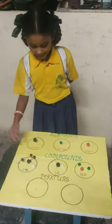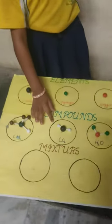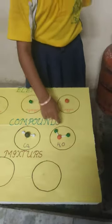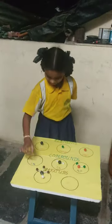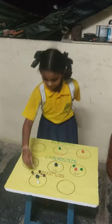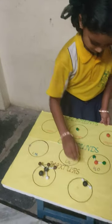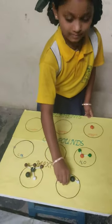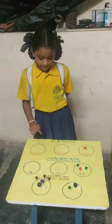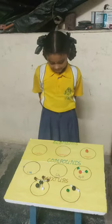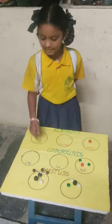Mixtures — examples of compounds: CH4, CO2, H2O. Mixtures — a combination of elements and compounds is called a Mixture.